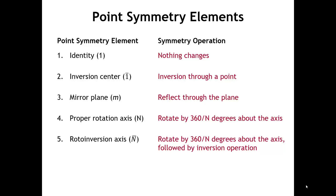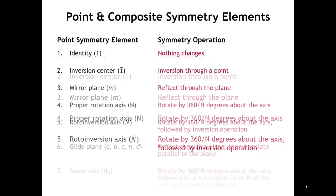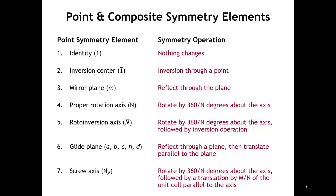In crystals, we have two additional symmetry elements that are a composite of one of these rotations or mirrors followed by a translation. These two new composite symmetry elements, which you don't have for isolated molecules but do have in crystals, are the glide plane and the screw axis.